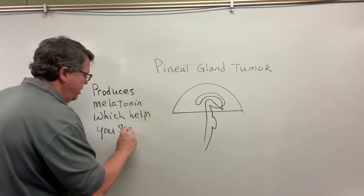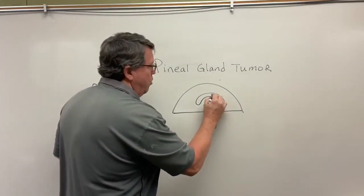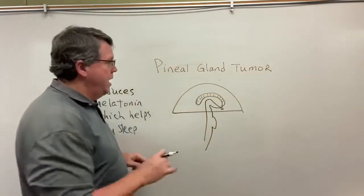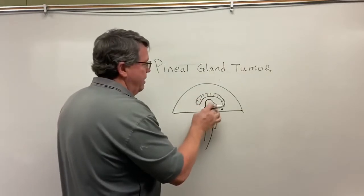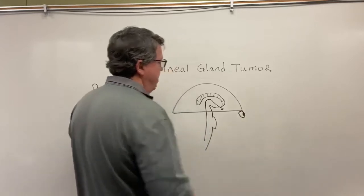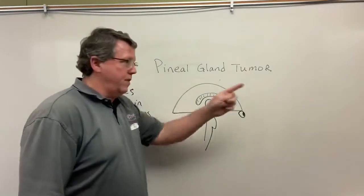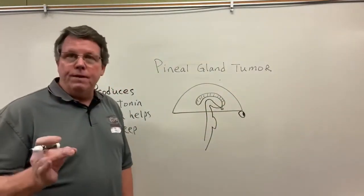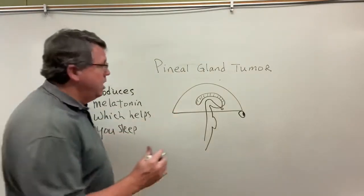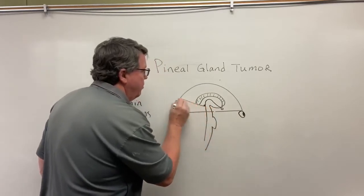So where is the penile gland located? We'll look at the brain here. This is basically my corpus callosum here — the corpus callosum connects one side of the brain to the other. In this area, we're going to have the thalamus, the epithalamus, and the hypothalamus. This is our pituitary gland right here, and this would be the pons. So the penile gland is going to be located basically in the epithalamus — we're going to put it somewhere right back here, and we'll say this is our penile gland.